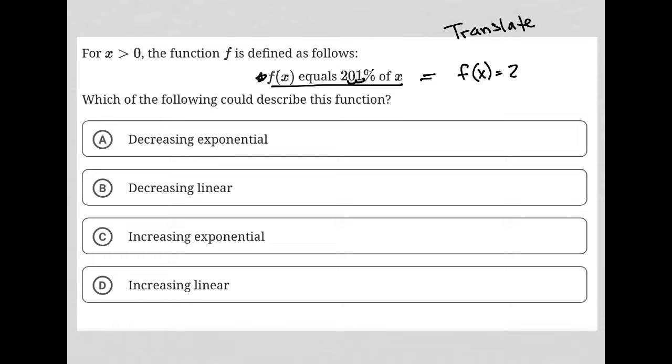This just becomes 2.01. Of means times, so of x will just be 2.01x. So there's my equation: f of x equals 2.01x.